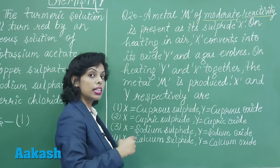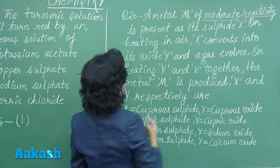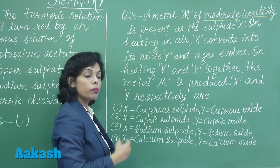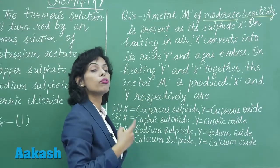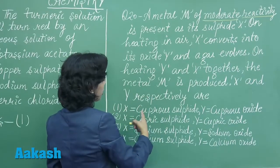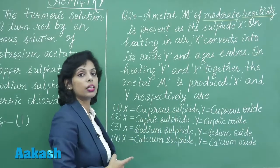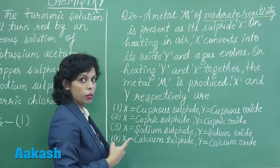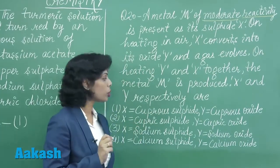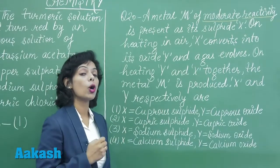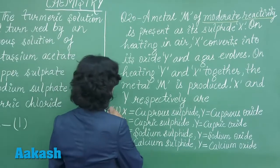Considering again that metal M of moderate reactivity is present as its sulphide — copper is naturally present in the form of cuprous sulphide. So there is more probability for option 1: cuprous sulphide as X. When we heat it, we get cuprous oxide as Y. When cuprous sulphide reacts with cuprous oxide, the metal M — copper — is obtained. So the correct answer for question 20 is option one.